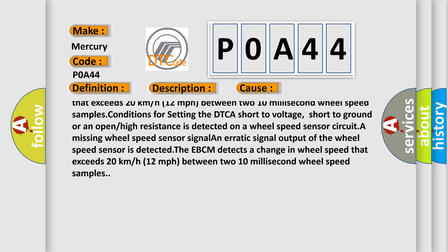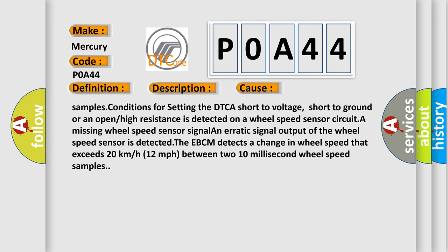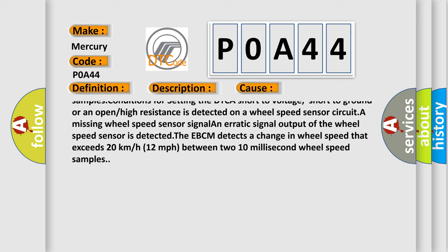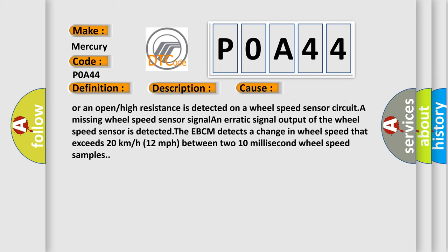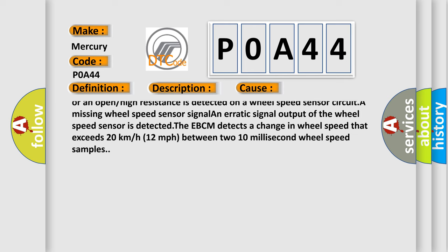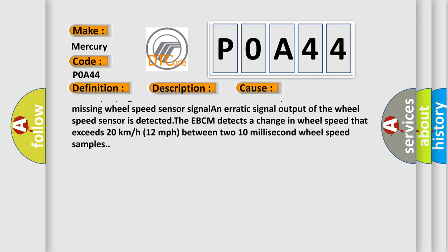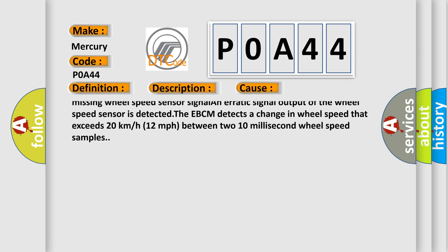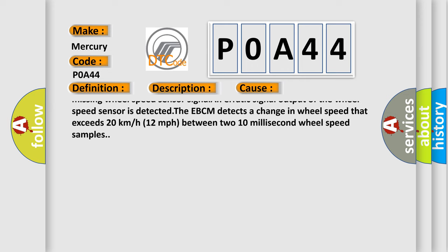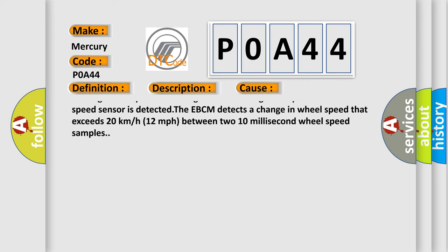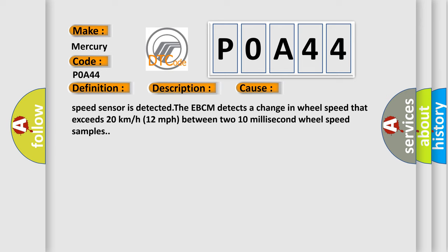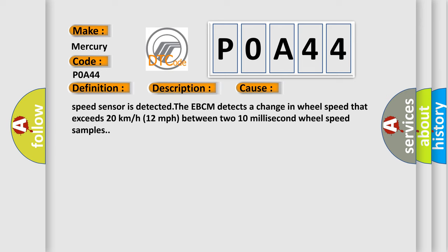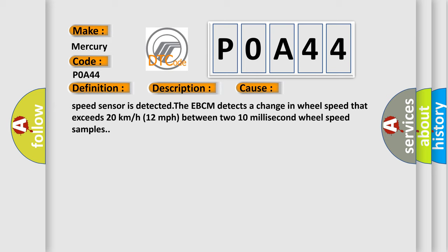A missing wheel speed sensor signal or an erratic signal output of the wheel speed sensor is detected. The EBCM detects a change in wheel speed that exceeds 20 kilometers per hour (12 miles per hour) between two 10 millisecond wheel speed samples. Conditions for setting the DTC include a short to voltage, short to ground, or an open or high resistance detected on a wheel speed sensor circuit.